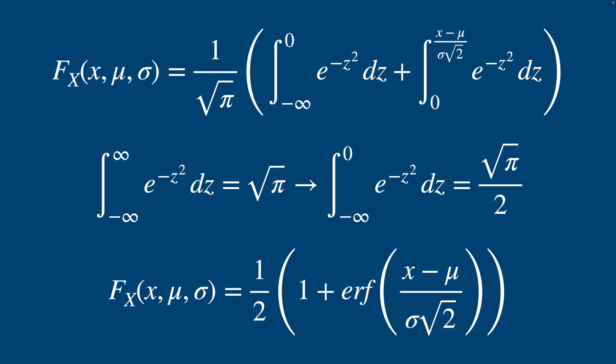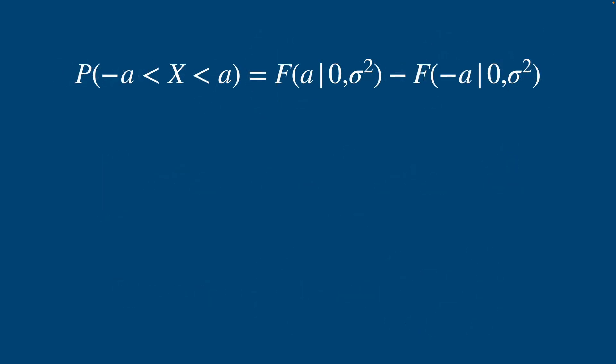You might think this is still not that useful, but consider the case when the results of a series of measurements follow a normally distributed random variable X centered around zero. In that case, we can represent the probability that the error lies between ±a using our normal CDF.